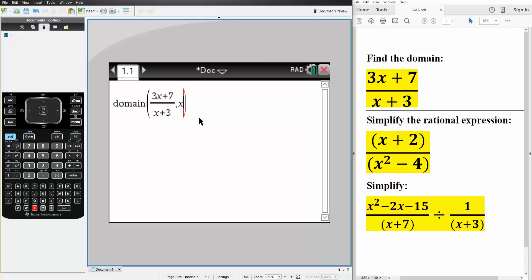Comma, x like this, hit enter, and it's saying x cannot equal negative 3. So we can think about it, if we have negative 3, we're dividing by 0, so that makes sense, the domain would be x cannot equal negative 3.